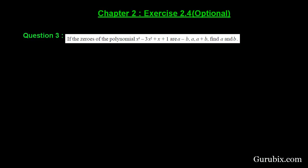Welcome friends, let us solve question number 3 of exercise 2.4 of chapter 2. The question is: if the zeros of a polynomial x³ - 3x² + x + 1 are a - b, a, and a + b, then find the value of a and b. This is a very interesting question, let us see how to do it.